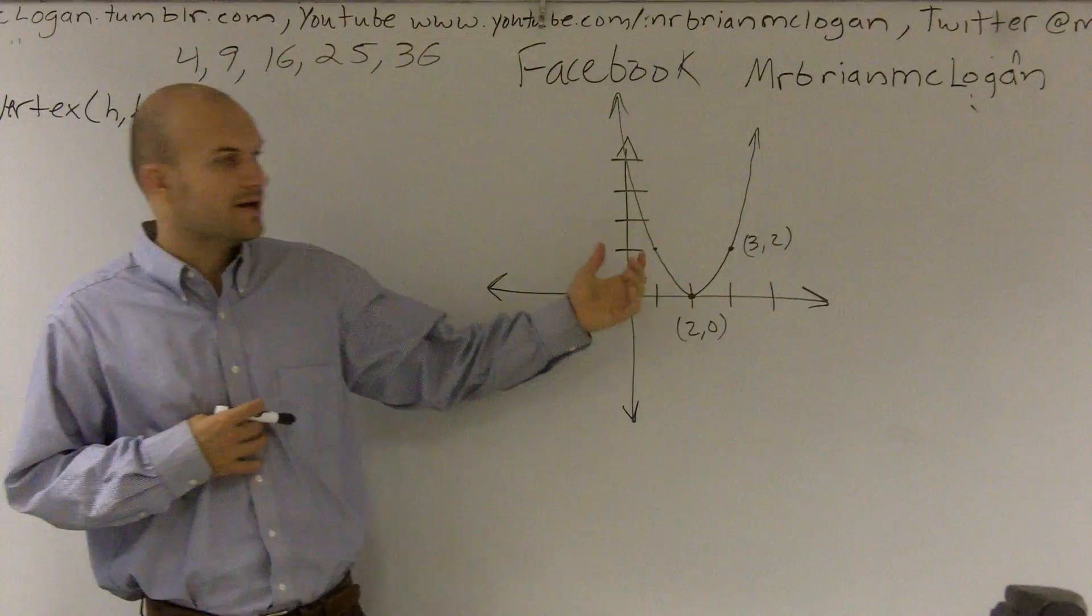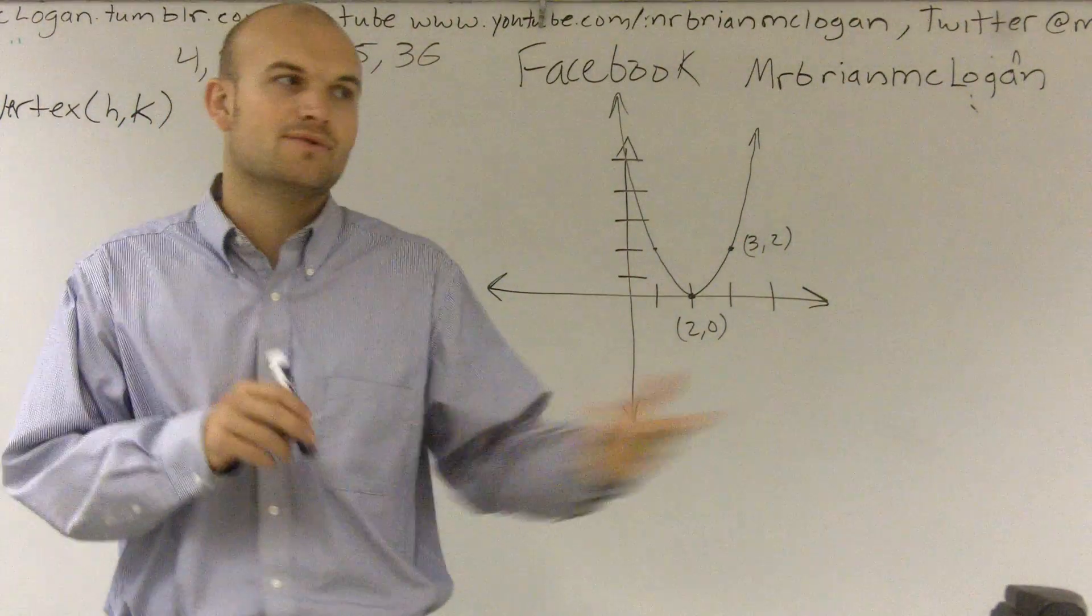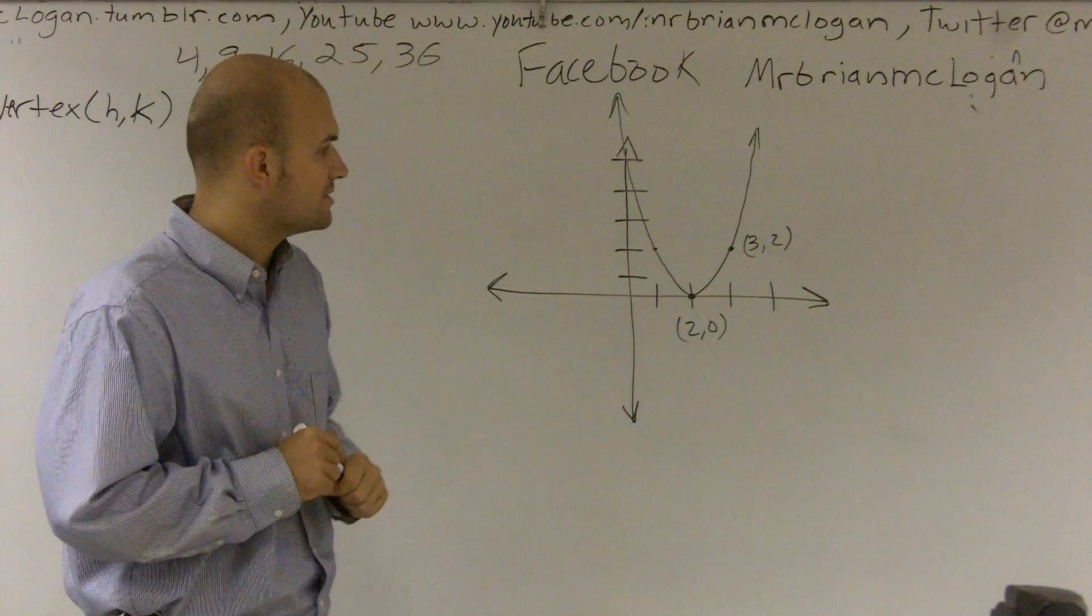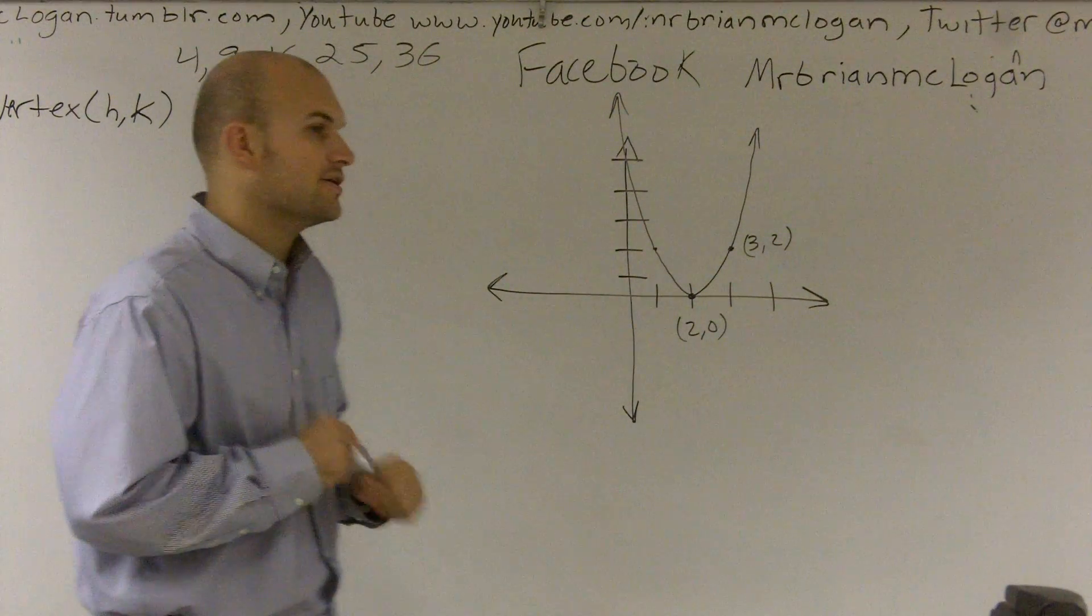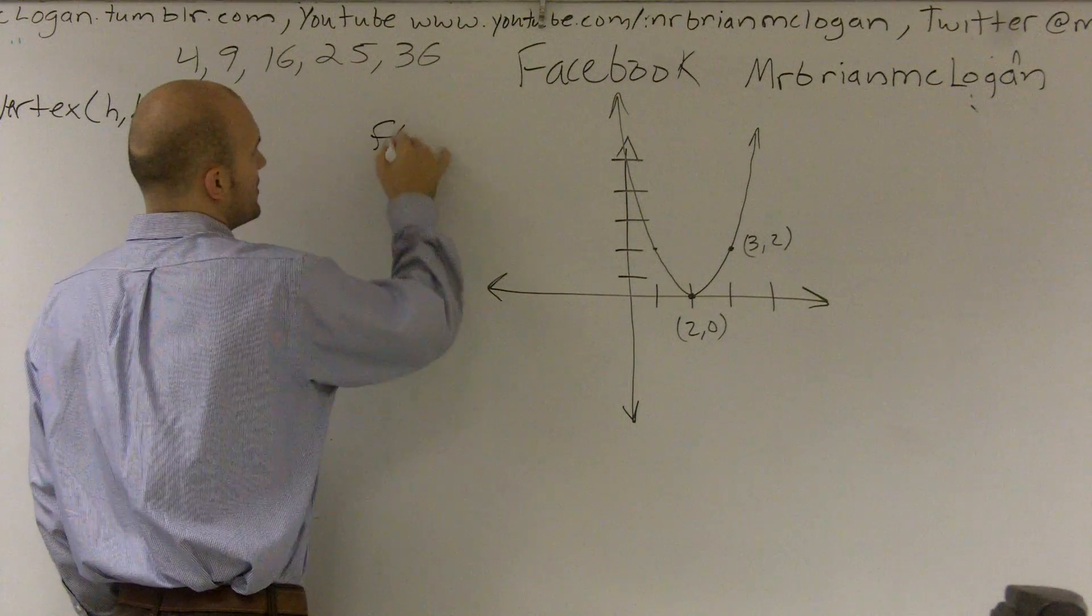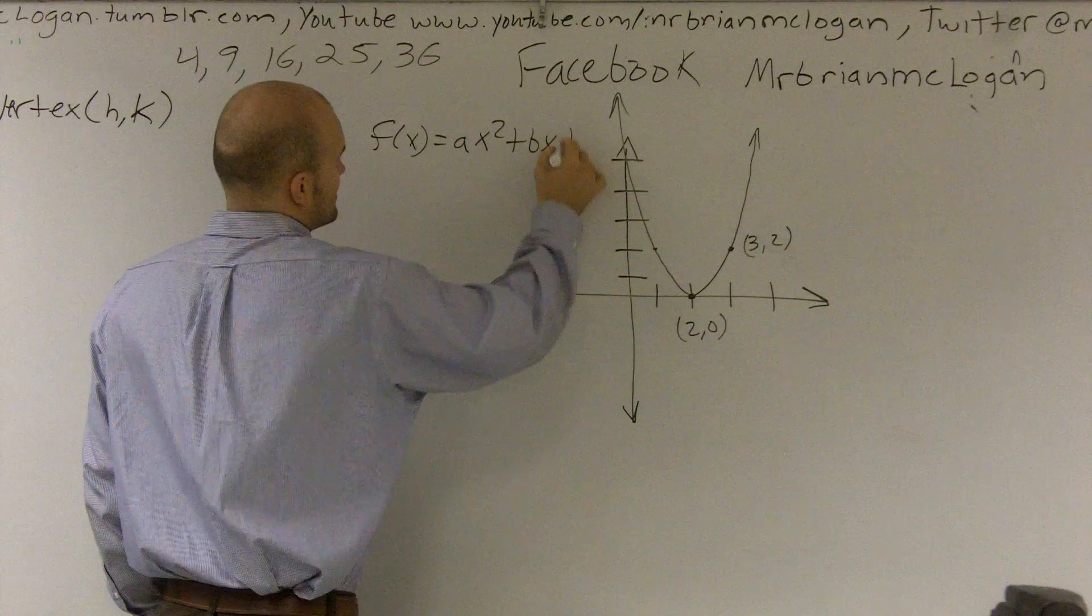What we're going to do is, we have a quadratic function, and I want to see if we can find out what the exact formula is for this quadratic function. So a very standard thing that we can use is, so far we've been familiar with f of x equals ax squared plus bx plus c.